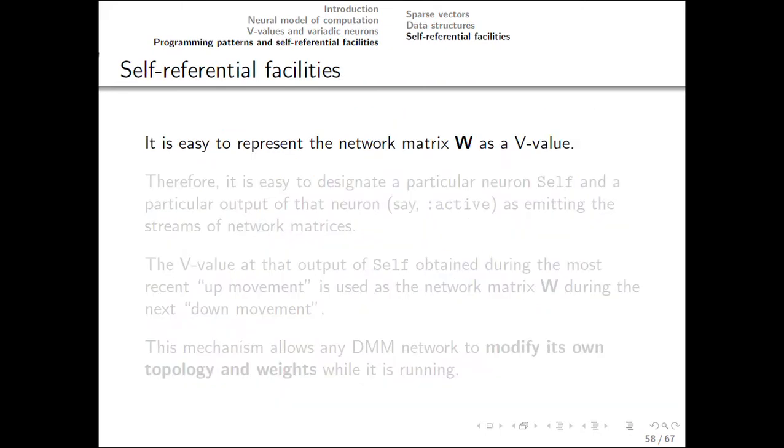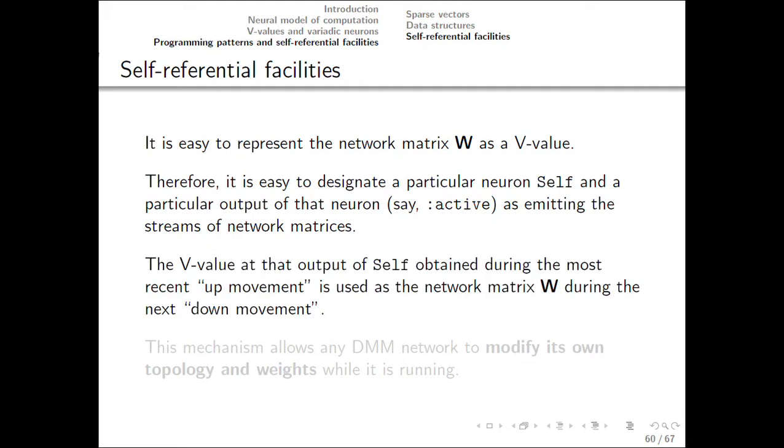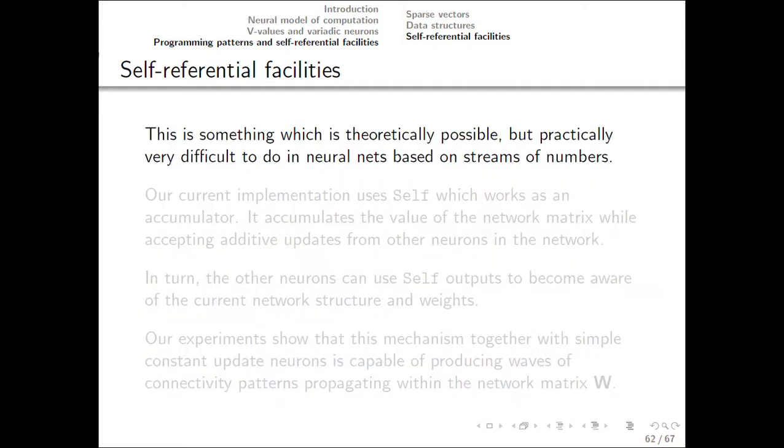The final topic I want to touch is self-referential facilities. It is easy to represent the network matrix as a V-value. So we can designate a neuron which will emit the stream of matrices which we'll use as network matrices. We'll use the latest version of the matrix obtained on the latest up movement as the network matrix during the next down movement. So this mechanism allows any dataflow matrix machine to modify its own topology and weights while it is running. And so that's fairly important. This is something which theoretically traditional scalar based neural nets can do, but practically you can't really use it. It's too difficult. Here this facility comes naturally.